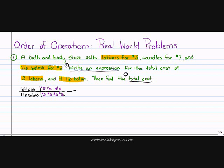Right off the bat, based on this table, I can go ahead and find the total cost. That would be five, ten, fifteen — I'm going to spend fifteen dollars on lotions — and two, four, six, eight dollars on lip balms. If I add these together, fifteen plus eight, I'm going to get twenty-three. So I'm going to spend a total of twenty-three dollars.